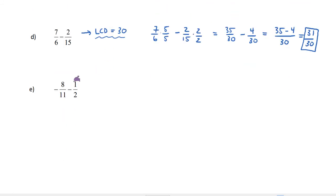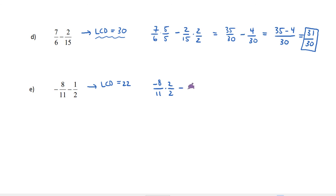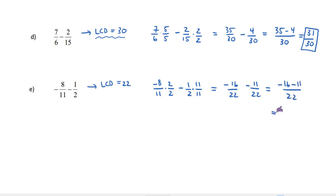For negative 8 over 11 minus 1 over 2: both denominators are prime, so the LCD is their product, 22. Multiply negative 8 over 11 by 2 over 2 to get negative 16 over 22. Multiply 1 over 2 by 11 over 11 to get 11 over 22. Then: negative 16 over 22 minus 11 over 22 equals negative 27 over 22.